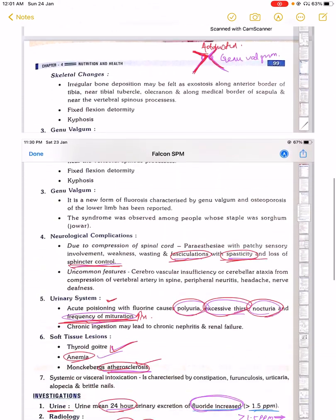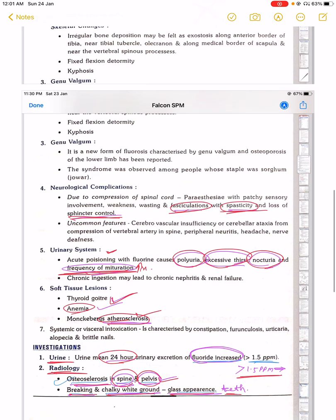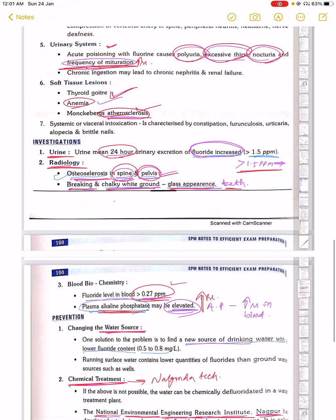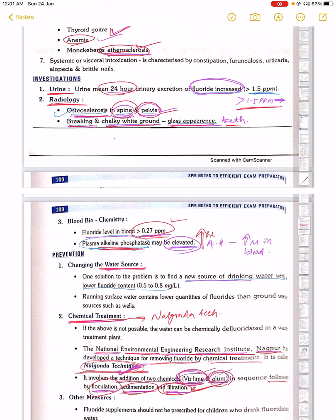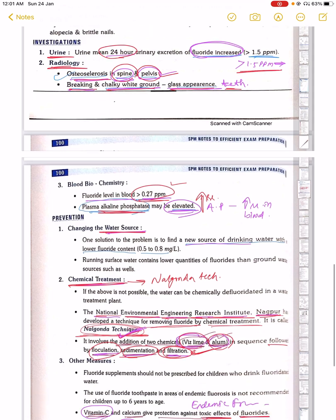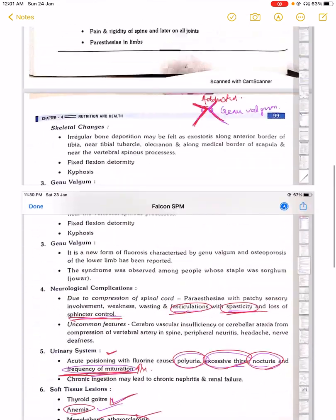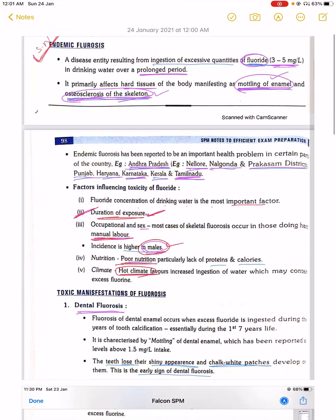Know the toxic manifestations: dental fluorosis, skeletal fluorosis, genu valgum, neurological complications like fasciculation, spasticity, paresthesia, sphincter control loss, urinary system complications, and soft tissue complications. Know the investigations - urine, blood, and radiological. And know how to prevent by changing water source, chemical treatment, and other measures.